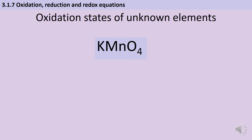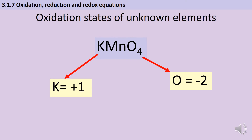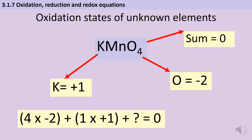Those rules tell you about a lot of elements in the periodic table but not all of them, so you need to be able to work them out for unknowns. Here we've got some potassium manganate and we're interested in the oxidation state of everything in that compound. Oxygen is always minus two, so four oxygen atoms each give minus two, making minus eight. Potassium — a group one metal — is always plus one. This is a neutral compound so the sum of all oxidation states must be zero. So: minus eight plus one plus the oxidation state of manganese equals zero, therefore manganese must have an oxidation state of plus seven.